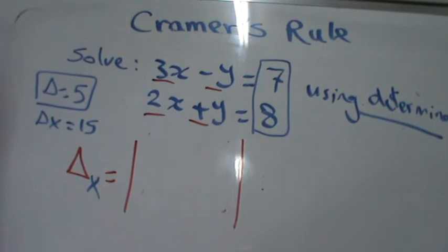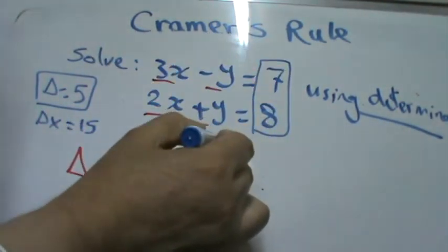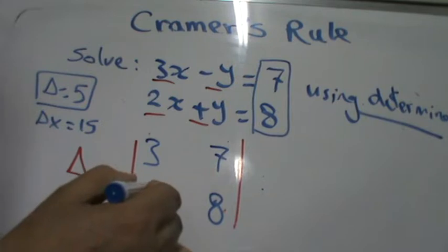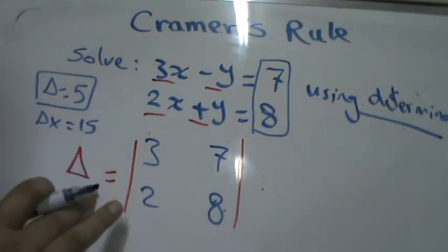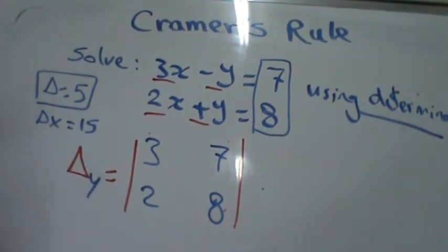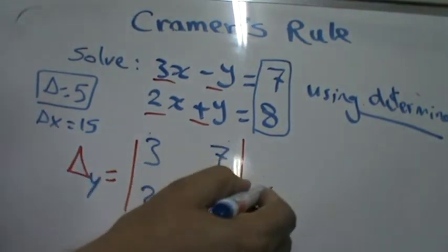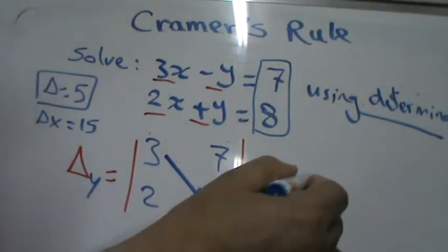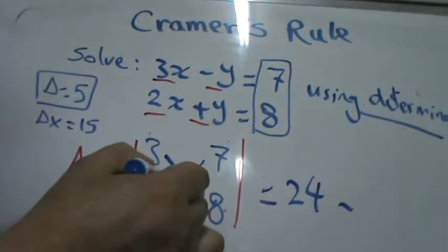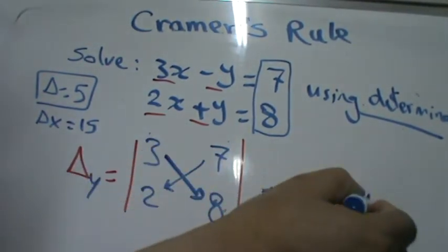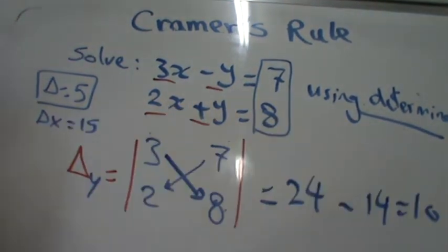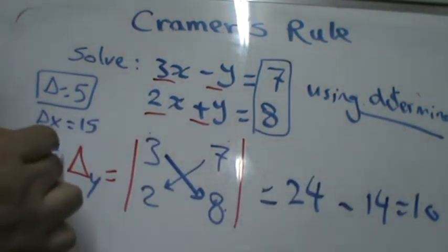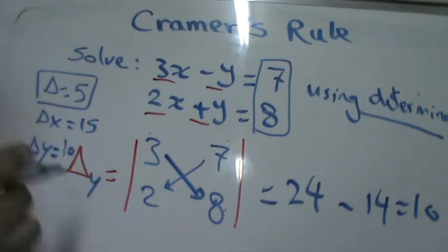Now find delta sub y by removing the column of y and replacing it with the constants 7 and 8, keeping 3 and 2. Evaluate: 3 times 8 is 24, minus 7 times 2 is 14, which equals 10. Delta sub y equals 10.